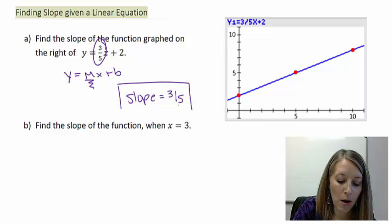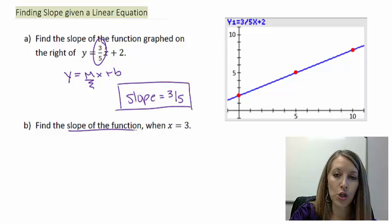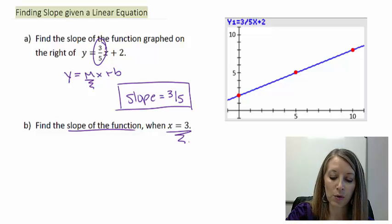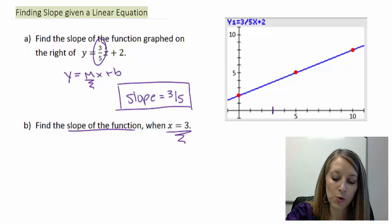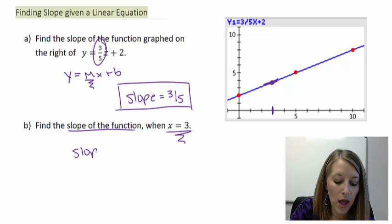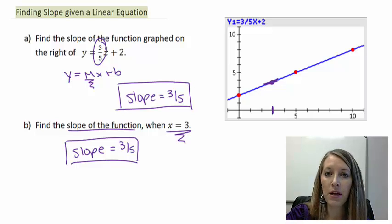The second part of this problem wants to know the slope of the function again, but at a very specific point, when we are looking at the x value specifically of x equals 3. Now if we looked over here on the right, here's where my x equals 3. If I found that point on my graph and wanted to know the slope at that point, it would be the exact same slope as the rest of the line. So it seems kind of like a weird question here. Why would I ask specifically at x equals 3 when I know the slope of my whole line is always 3 fifths at any place? And the reason that I have this part b here is to help lead us into the next examples, which will help lead us into the definition of the derivative.